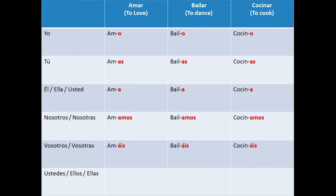Vosotros, vosotras: amáis, bailáis, cocináis. Remember that this conjugation is just used in Spain. If you want to learn the Latin American conjugation, it's okay — everybody will understand you anyway.